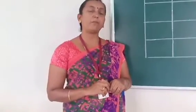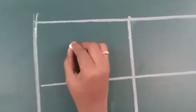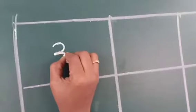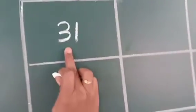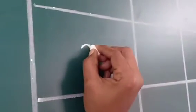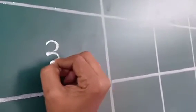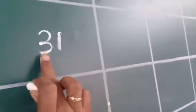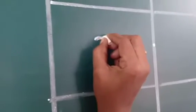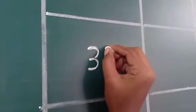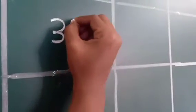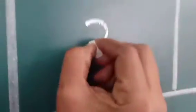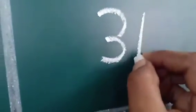Today we are going to learn the new numbers from 31 to 35. How to write number 31? Left curve, again one left curve, and near one standing line. What is the number? 31. Say the number: 31. Write again — left curve, again one left curve, and near one standing line — it gives 31. Very good. Write slowly. 31.